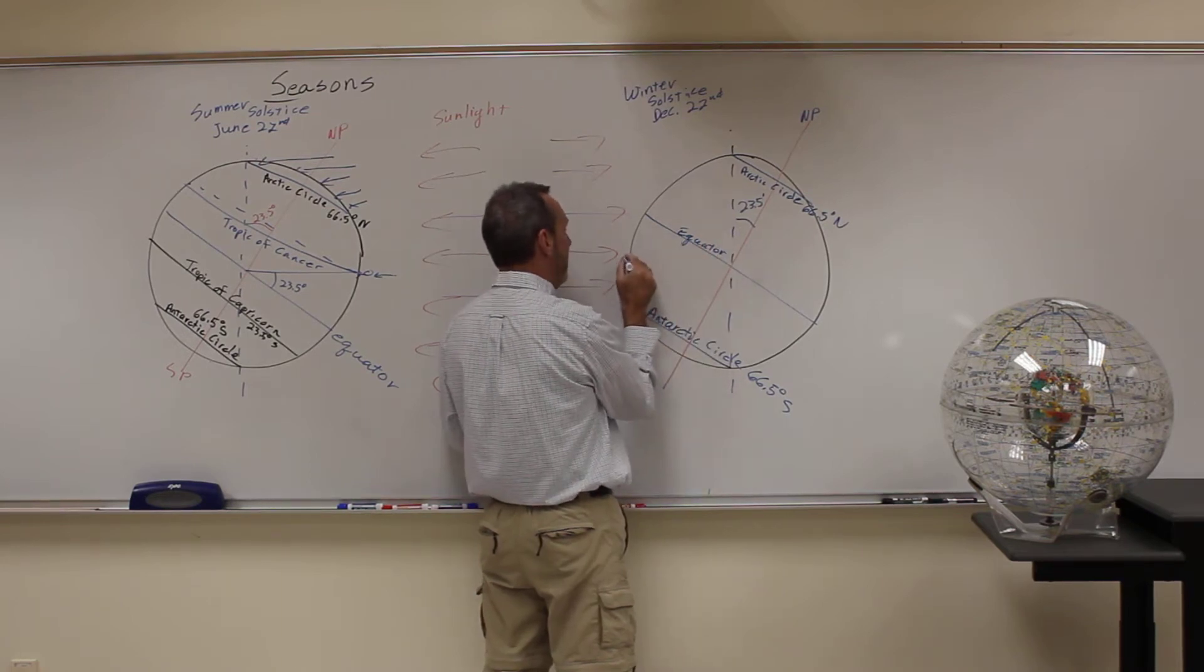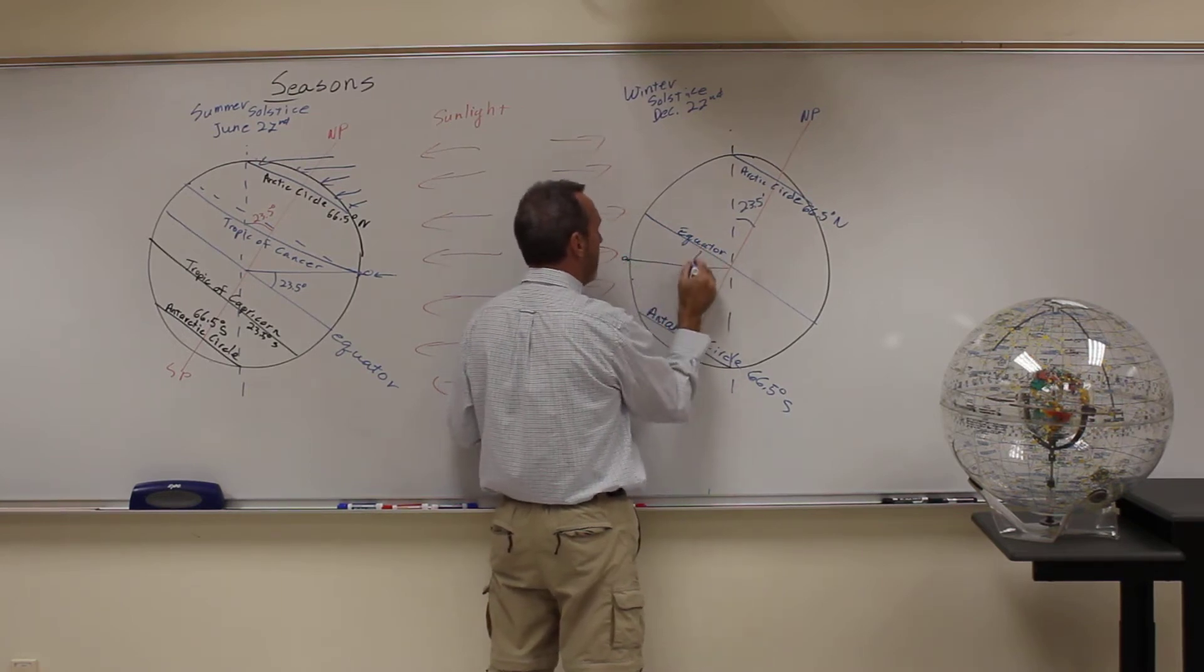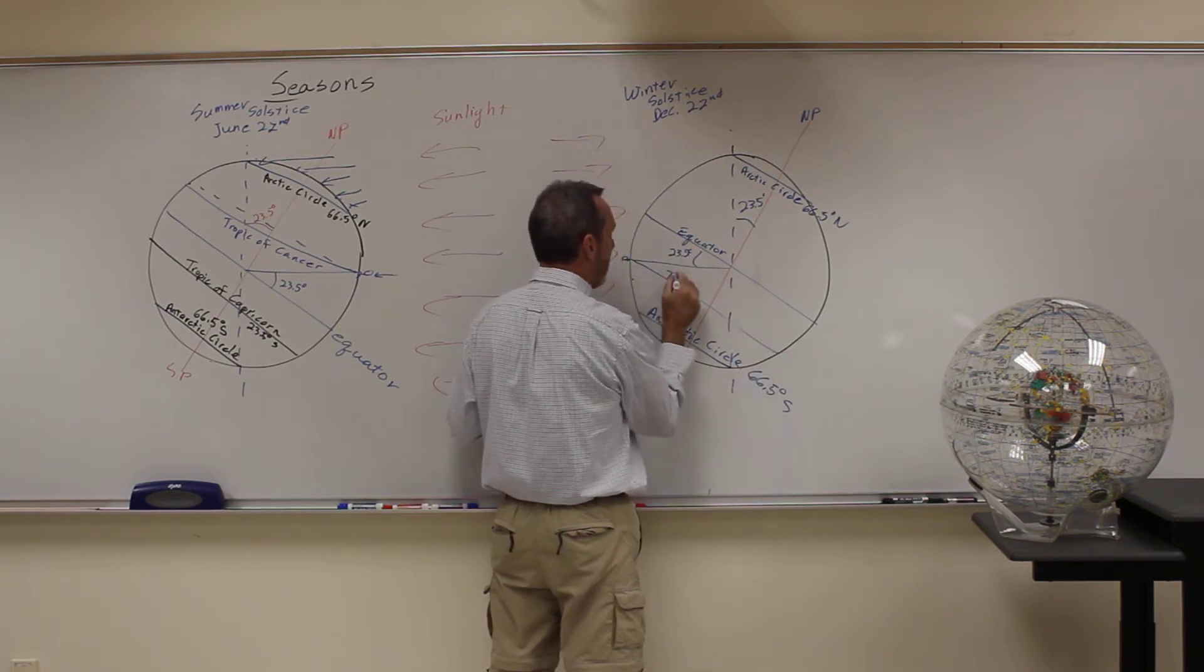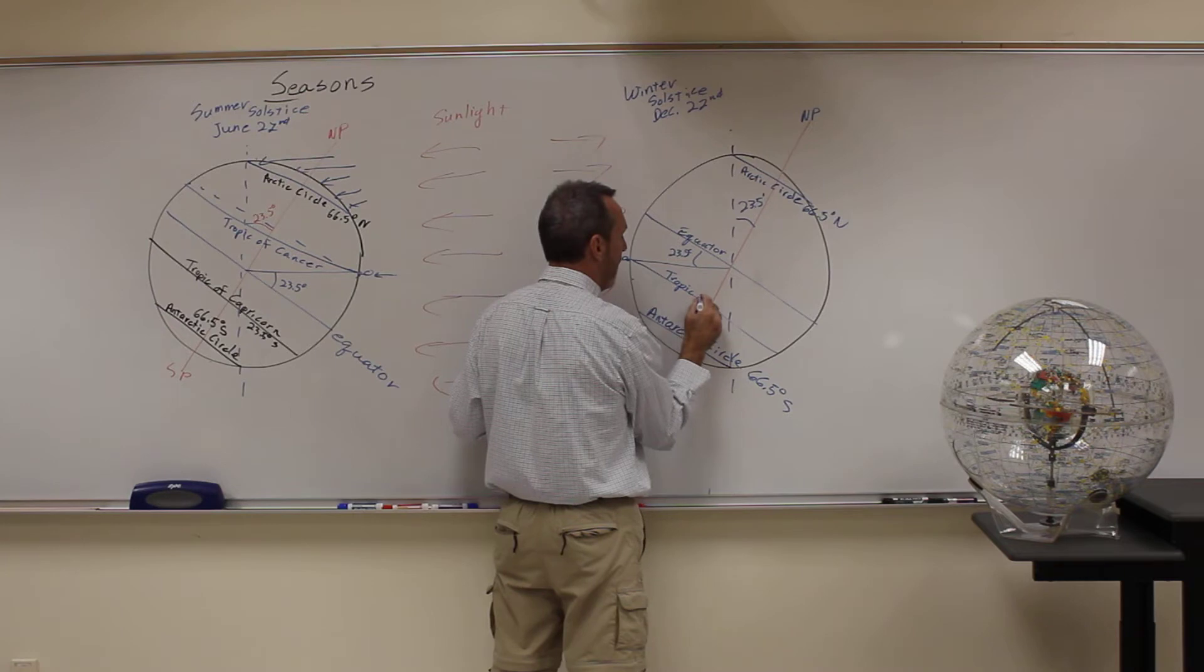And where is the Sun directly overhead? Well, if you're at a latitude of 23 and a half degrees, or at the Tropic of Capricorn,